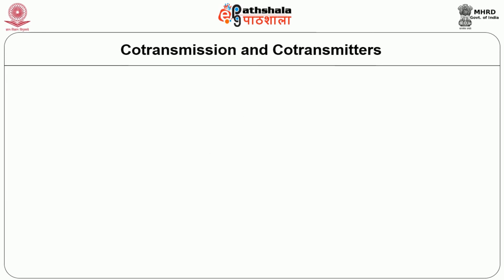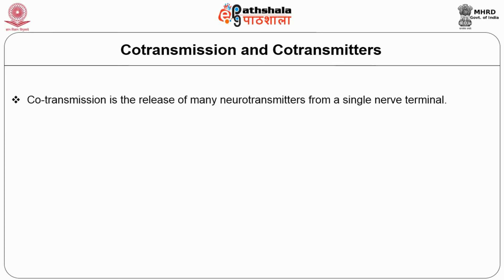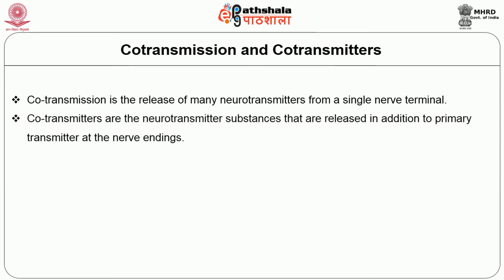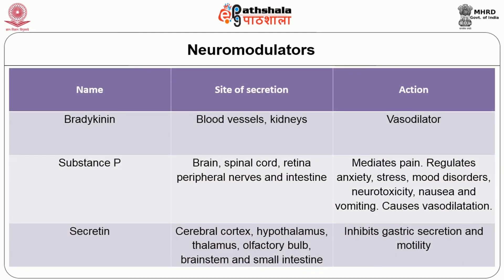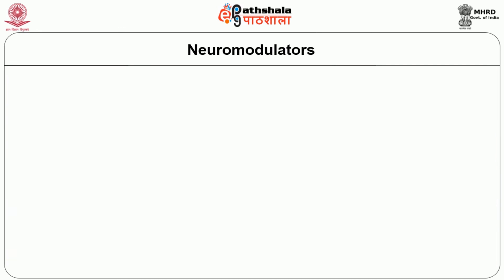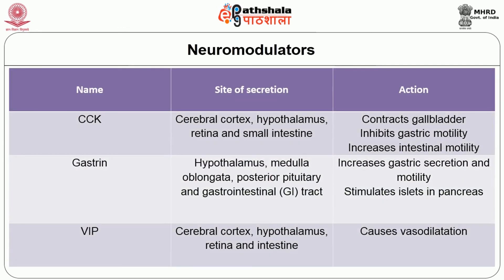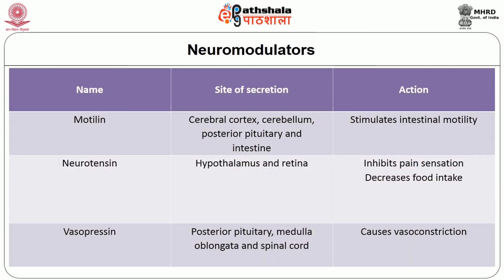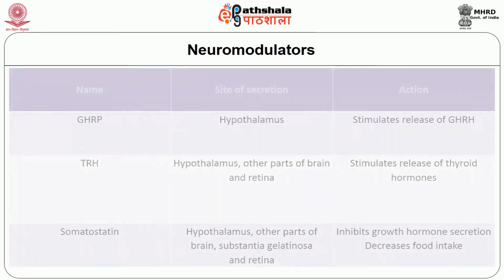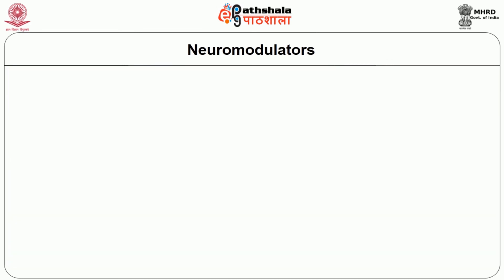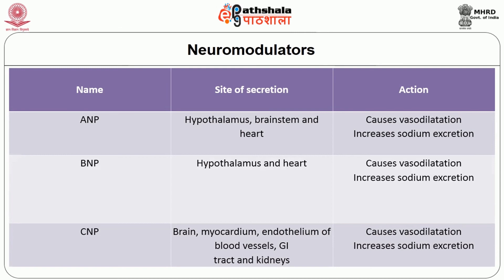Moving on to co-transmission and co-transmitters. Co-transmission is the release of many neurotransmitters from a single nerve terminal. Co-transmitters are neurotransmitter substances released in addition to the primary transmitter at the nerve endings. Non-opioid substances acting as co-transmitters include bradykinin, substance P, secretin, CCK, gastrin, VIP, motilin, neurotensin, vasopressin, oxytocin, CRH, GHRH, GHR, TRH, somatostatin, ANP, BNP, CNP, neuropeptide Y, and ghrelin.